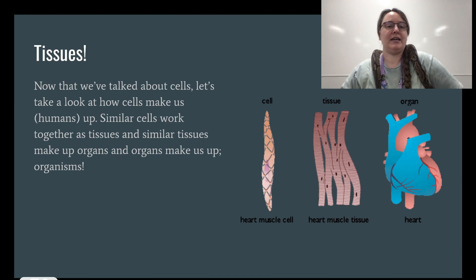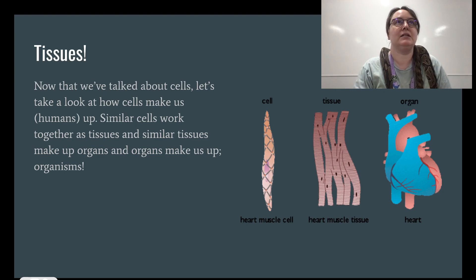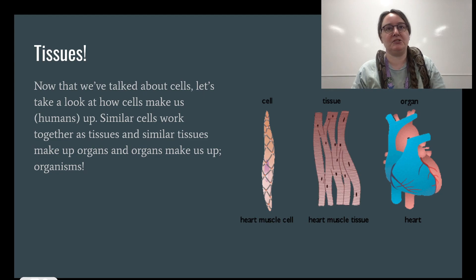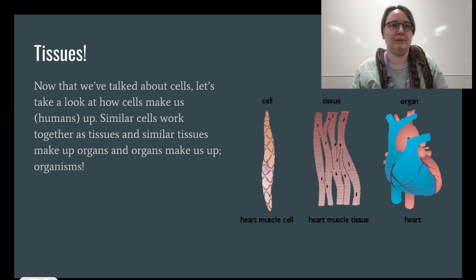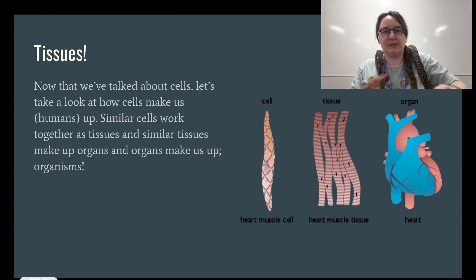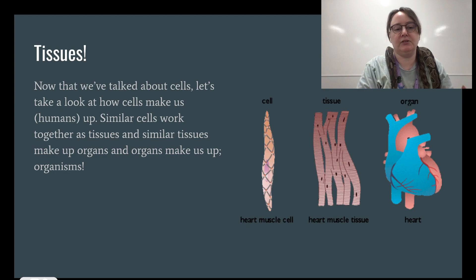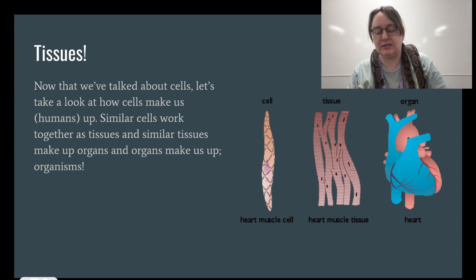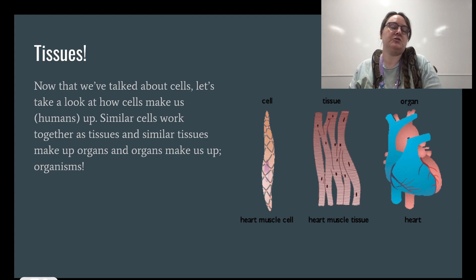Now that we've talked about cells and gotten over the rough spots of this course — the first four chapters usually throw everybody for a loop because we're just driving by a lot of major biology concepts and just touching on them. It's really helpful to have a biology course before anatomy and physiology, but not everybody has that luxury. Now we're getting into the meat and potatoes of anatomy and physiology — we've covered the biochemistry, the cells on the cellular level, and now we're going to talk about how cells make up humans.